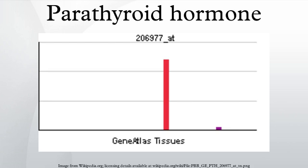Parathyroid hormone, parathormone or parathyroin, is secreted by the chief cells of the parathyroid glands as a polypeptide containing 84 amino acids. It acts to increase the concentration of calcium in the blood, whereas calcitonin of the thyroid gland acts to decrease calcium concentration. PTH acts to increase the concentration of calcium in the blood by acting upon the parathyroid hormone 1 receptor and the parathyroid hormone 2 receptor.